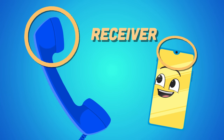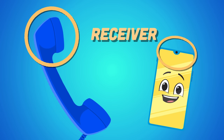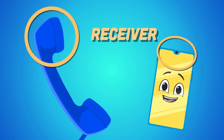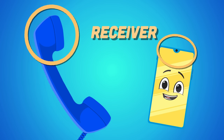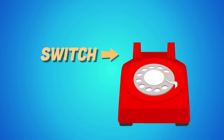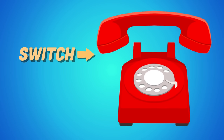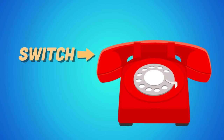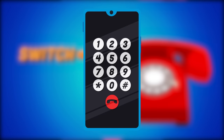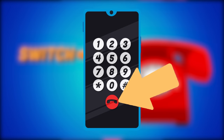The earpiece receives sound transmitted by the phone. This is also called the receiver. The switch in the landline phone stops a call. You can find this in a cell phone — it's the red button.